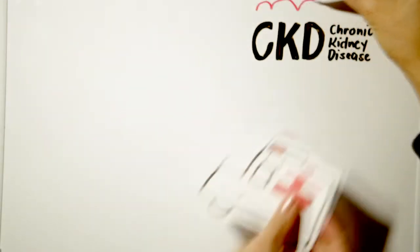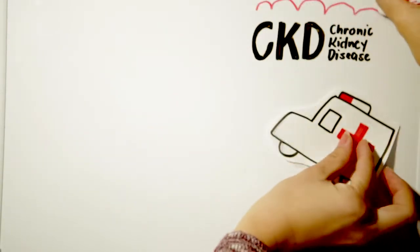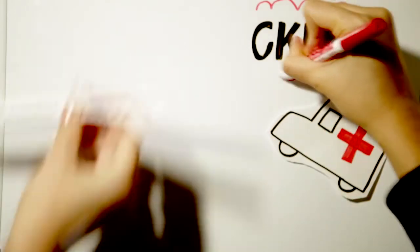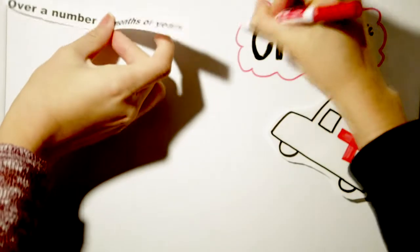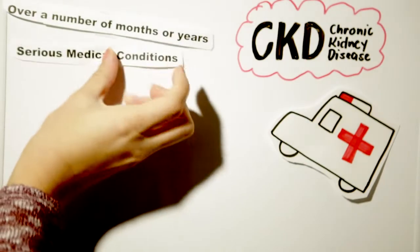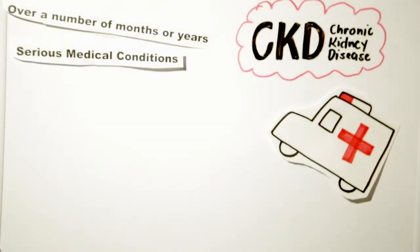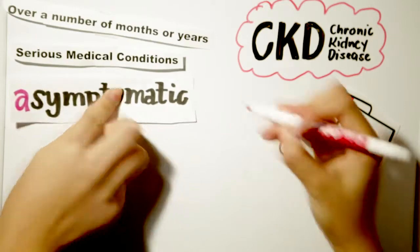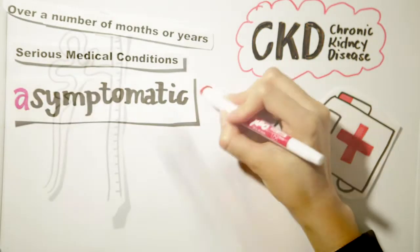Chronic kidney disease is a gradual failure of kidneys over months or years. It is mainly caused due to the complication of a serious medical condition. The fall in renal activity is so gradual that until complete kidney failure, almost no symptoms are seen.